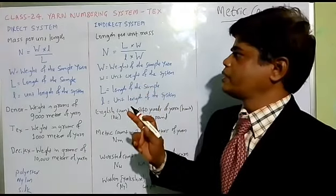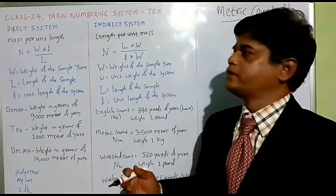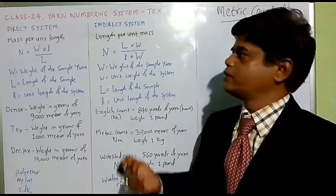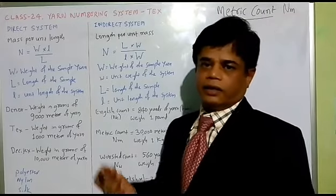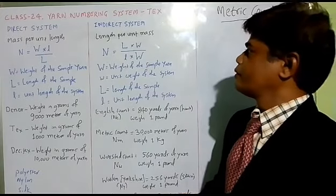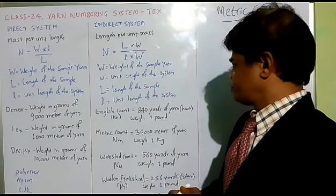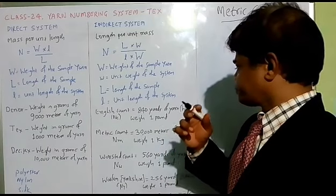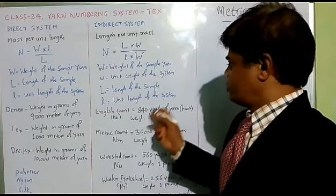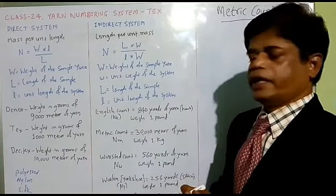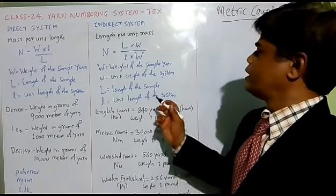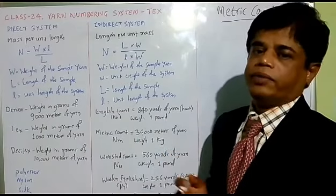In direct system, the length is fixed. Whatever result we get in grams, that is the denier or tex - that is direct system. But in indirect system, the mass is fixed. In indirect system, weight is fixed and length is varying.